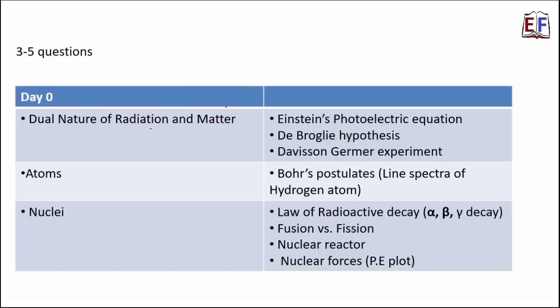Now the important topics for dual nature of radiation and matter are Einstein's photoelectric equation. This is very important. So you may get direct questions based on photoelectric equation or you may even get questions related to dependency on intensity, frequency and their plots. So basically you should be thorough with photoelectric equation. De Broglie hypothesis and Davison-Germer experiments are two other topics which you should not miss while you are revising. The next lesson is atoms and in atoms the most important topic is Bohr's postulates. In fact in Bohr's postulates if you see the line spectra of hydrogen atom where we talk about Lyman, Balmer, Paschen, Pfund and all of those lines, they are very important. So there are chances that you may get a question based on that.